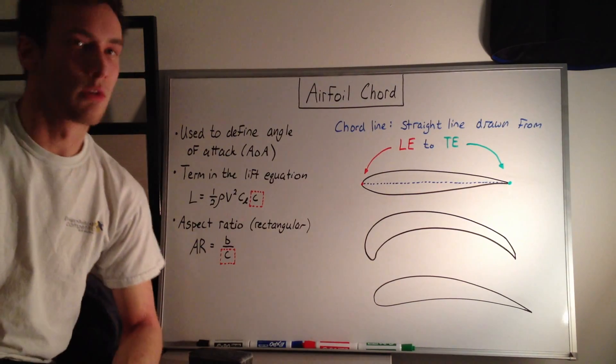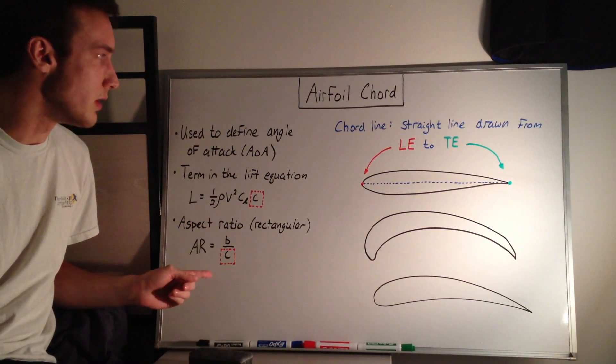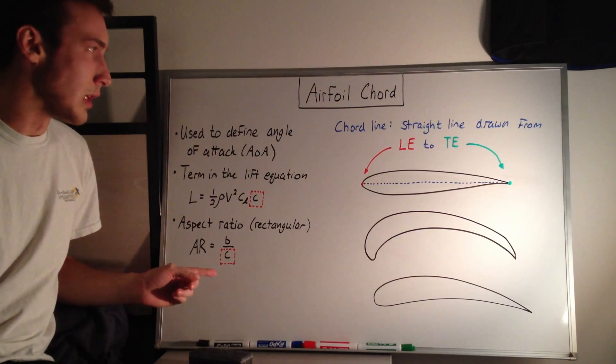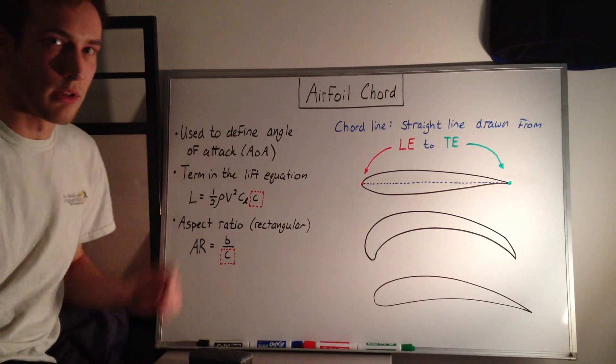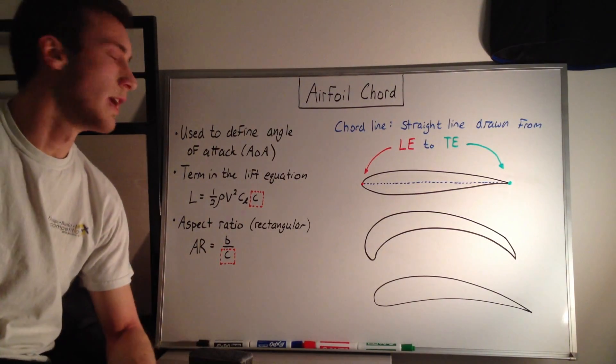So, what do we use the cord for? Here are a few of the things that we use the cord line and cord length for. The first one that's really important is it's used to define the angle of attack.